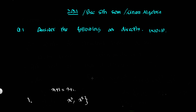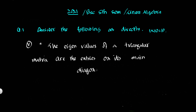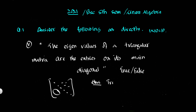Question number five: The eigenvalues of a triangular matrix — true or false. The eigenvalues of a triangular matrix, whether upper or lower triangular, are the entries on the main diagonal.